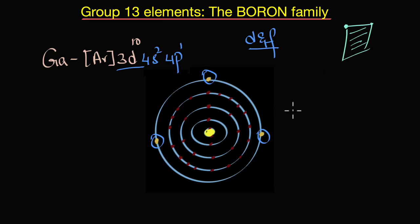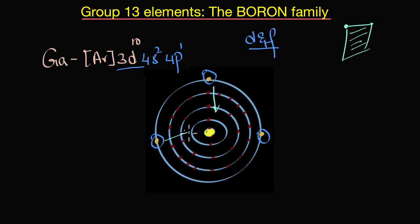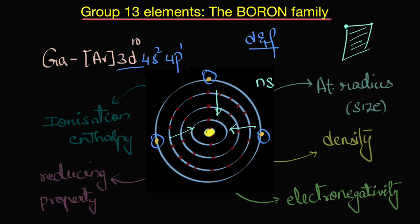The d and f electrons act like a thinly veiled curtain. Imagine you're preparing for an exam and cover the window with a thin curtain — you can still see everything outside and get distracted. Similarly, the valence electrons cannot escape the pull of the nucleus, and get pulled closer towards it, especially the ns valence electrons.